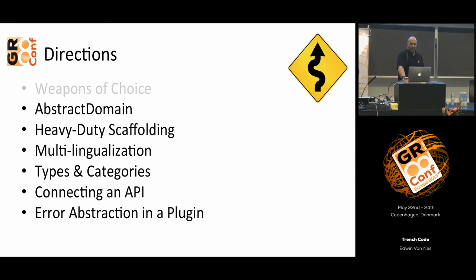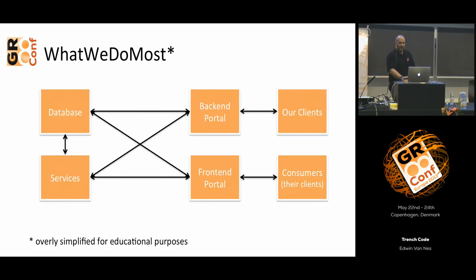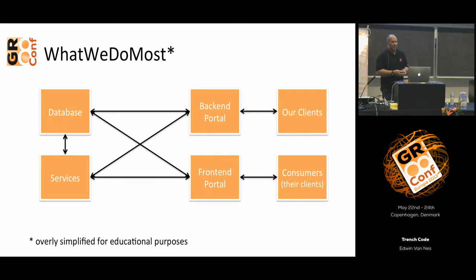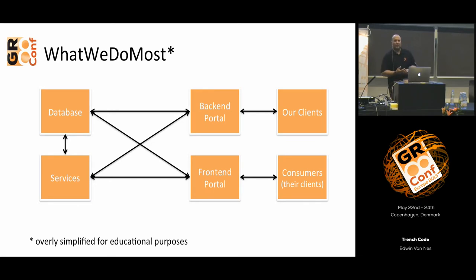One of the important things we use in our designs is an abstract domain. That's really a Groovy kind of way to do it, but it helps us a lot. A simplified view of the type of applications we mostly built: we have a database, a couple of services, and typically two portals talking to the logic. The one on the upper right is used by our clients — it's typically the back end of the application. The portal on the lower right is where the consumers come in, typically the clients of our clients.